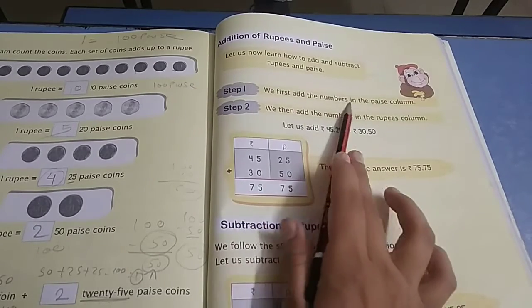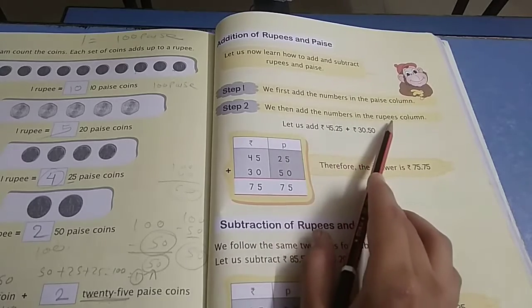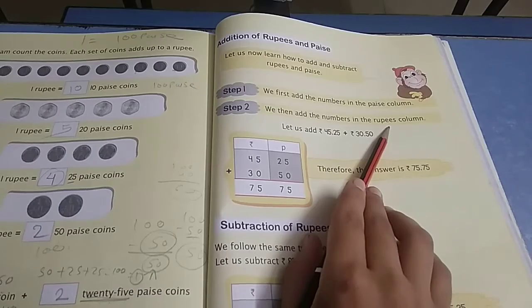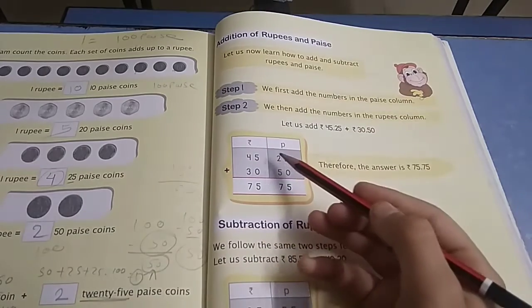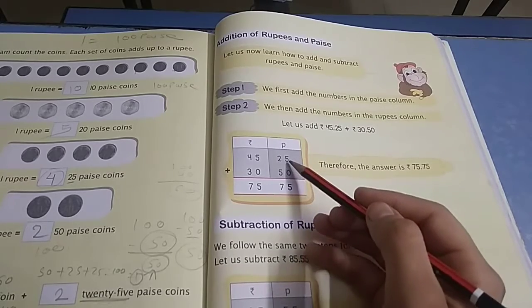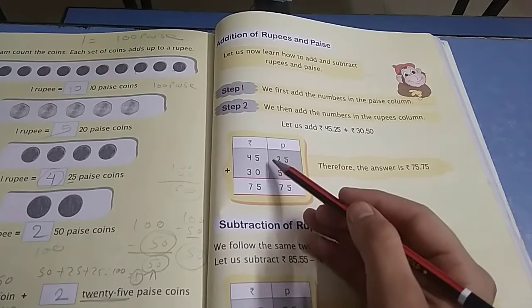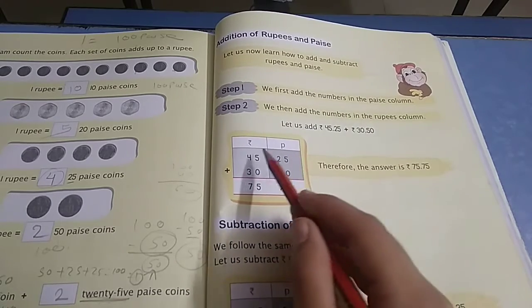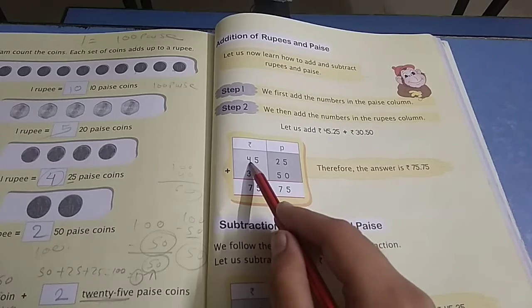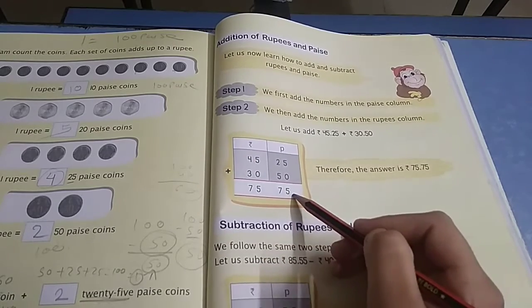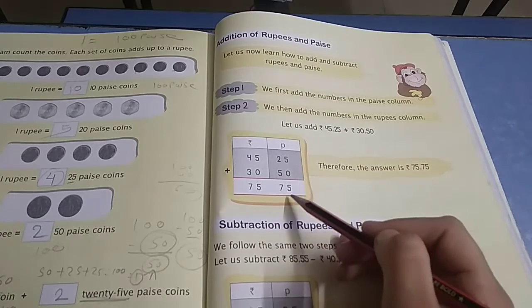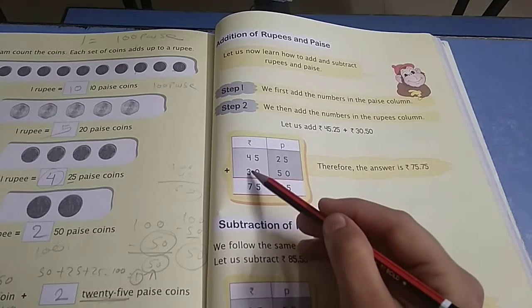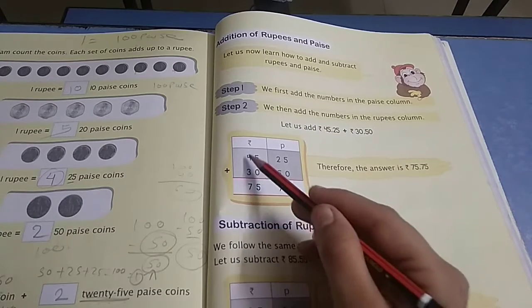Then we add the numbers in the rupees column. Let's start. 5 plus 0 is 5, 2 plus 5 is 7, so 75 paise. 5 plus 0 is 5, and 4 plus 3 is 7, so 75 rupees 75 paise.